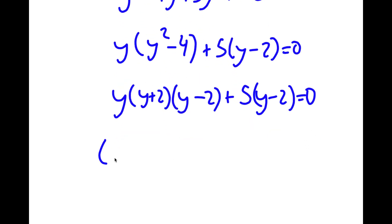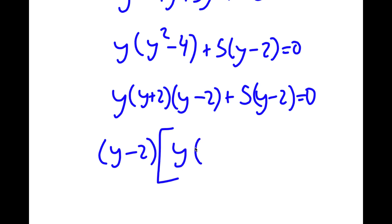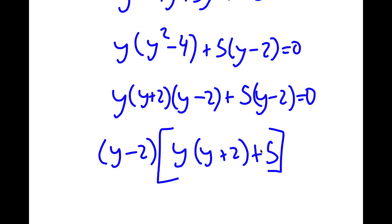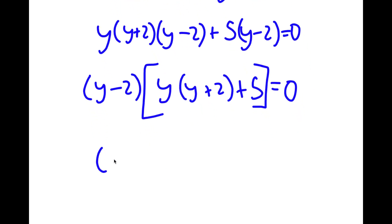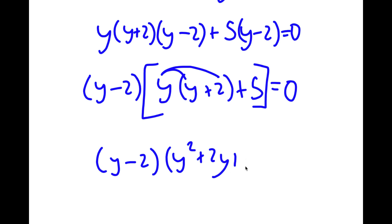If I factor out y minus 2, I have y minus 2 times y times y plus 2 plus 5, which is equal to 0. This is the same thing as y minus 2 times — if I distribute y — y squared plus 2y plus 5 is equal to 0.